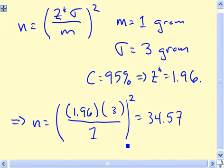Now with these sample size calculations, what you should always do is round up, because that's more conservative. So we would take n equals 35 for our sample size. We obviously can't have a sample of size 34.57, so we go up to 35.